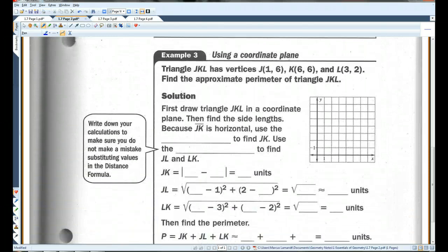Example 3. Triangle JKL has vertices 1, 6. 1, 6 is going to be about 1, 2, 3, 4, 5, 6. About here. This is J. 6, 6, that would be, like, here. That's K. And 3, 2. That's L. Find the approximate perimeter of J, K, L. So here's our triangle.